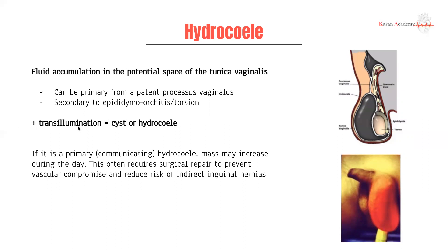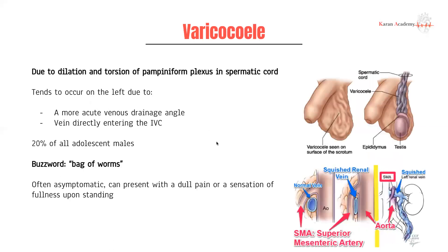You would see positive transillumination, because transillumination means the structure lights up when you pass a light through it — that indicates either a cyst or a hydrocele, both fluid-containing. If the fluid accumulation is secondary to something like epididymo-orchitis, we would not treat it aggressively — definitely no surgical management, as there's nothing to surgically fix. But if there is a communicating hydrocele, we might want to fix that surgically.